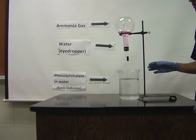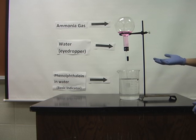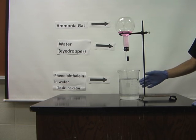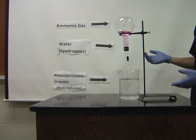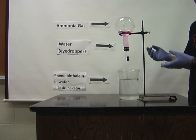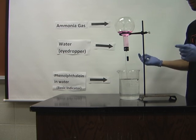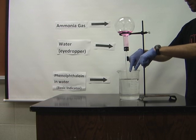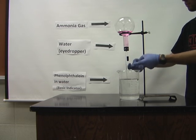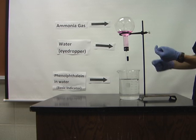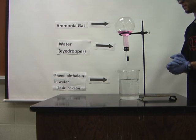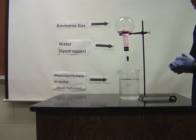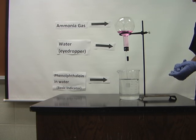So why is this filling with water from down here? When you squirt the water into the gas, the gas dissolves, causing a pressure change. The air from the outside is pushing on the air in the beaker, forcing it up into the tube and into the flask. So the solution is turning pink because